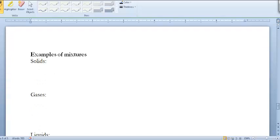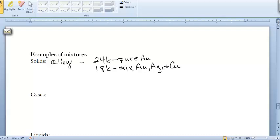Let's look at some examples of mixtures. Solids: we can put together different metals and make an alloy. If you look at gold, you can buy 24 karat gold or 18 karat gold. 24 karat is pure gold atoms. 18 karat is a mixture of gold, silver, and copper atoms.